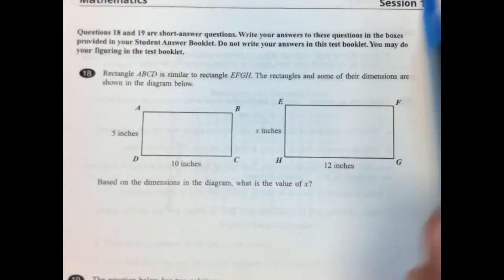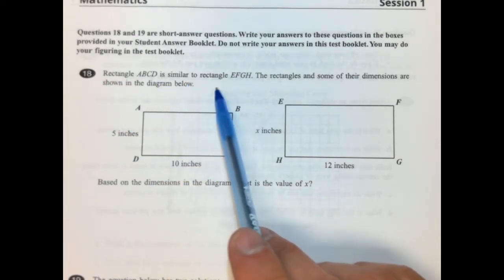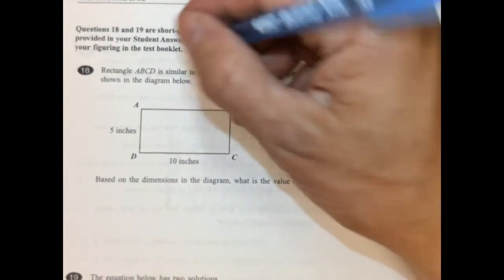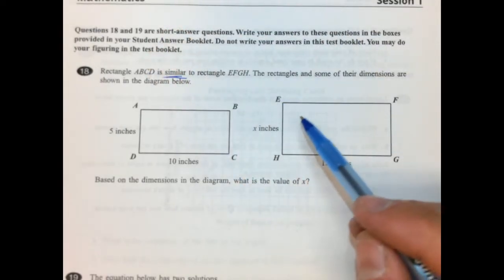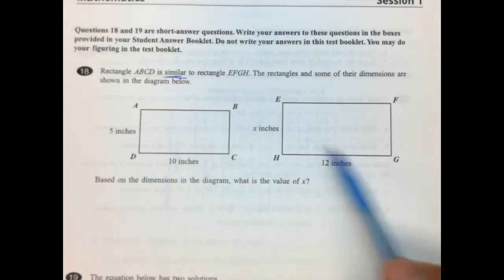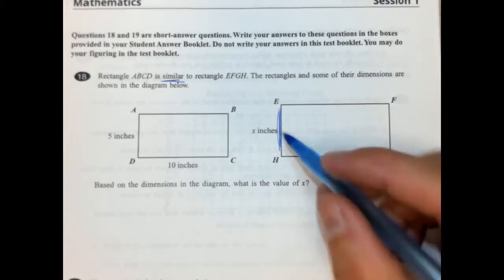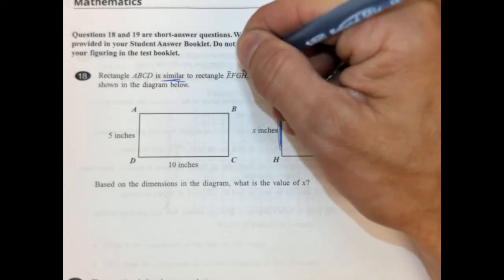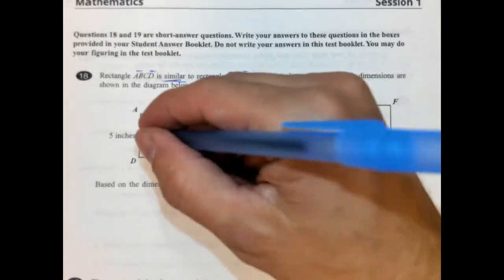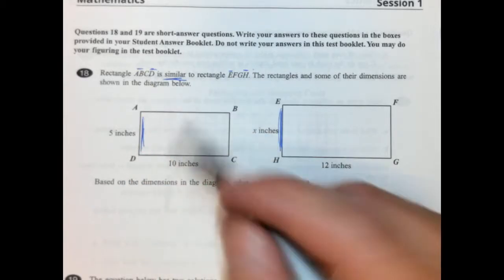Alright, rectangle ABCD, and by the way this is a non-calculator section. ABCD is similar to rectangle EFGH, so similar is important. The rectangles and some of the dimensions are shown below. Okay, so we have these two dimensions and these two dimensions. Solve for X. Okay, so what we're going to do is look to see what side matches up with EH. So EH is the first and last. So that means EH and AD correspond. So they didn't try to trick us here. They are oriented in the same way, but that's why we have to check the similarity statement right here.